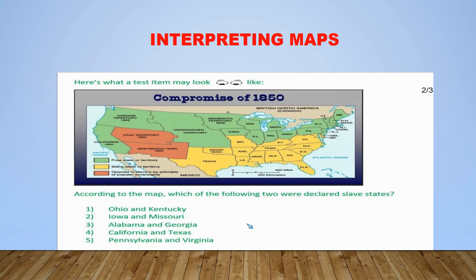Here's what a test item may look like. According to the map, which of the following two were declared slave states? And here you have your five options. You have option one, Ohio and Kentucky; two, Iowa and Missouri; three, Alabama and Georgia; four, California and Texas; and five, Pennsylvania and Virginia.